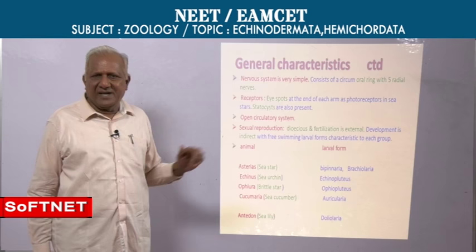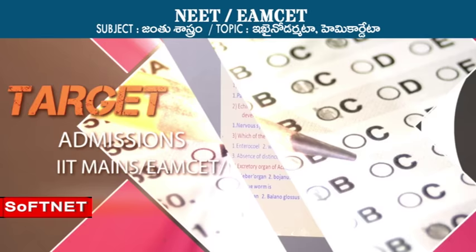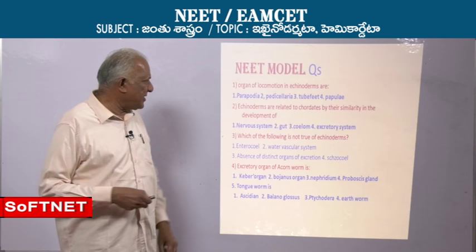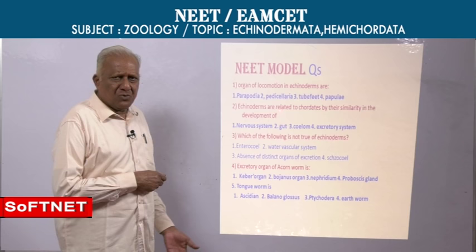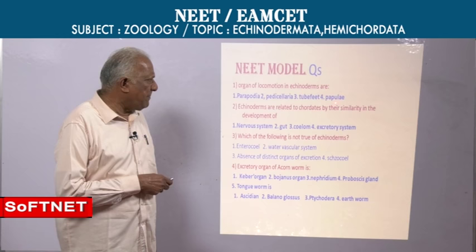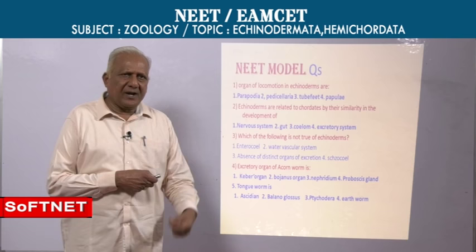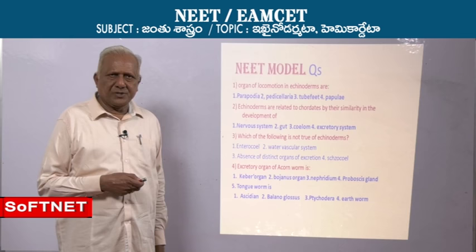Organs of locomotion in echinoderms: pedicillariae are there in echinoderms but not useful in locomotion. Papulae in sea stars are useful for respiration. Tube feet are the organs of locomotion, excretion, respiration, and food collection.